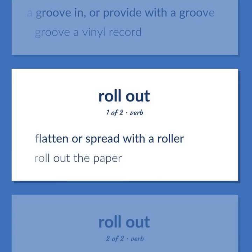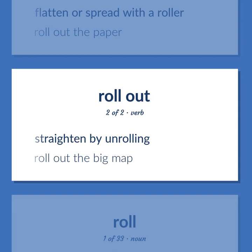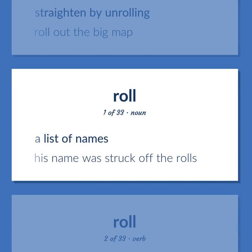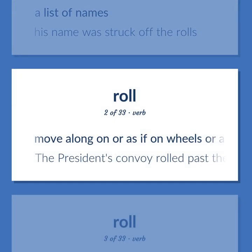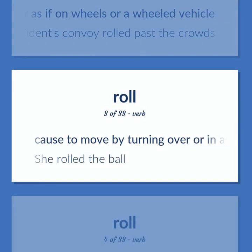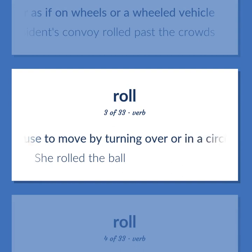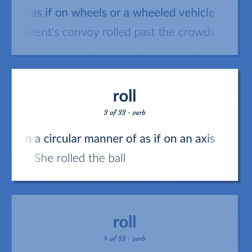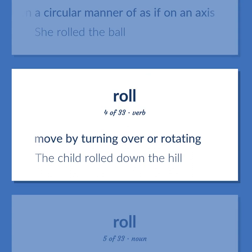Roll: to flatten or spread with a roller — roll out the paper. To straighten by unrolling — roll out the big map. A list of names — his name was struck off the rolls. To move along on or as if on wheels — the president's convoy rolled past the crowds. To cause to move by turning over or in a circular manner — she rolled the ball. To move by turning over or rotating — the child rolled down the hill.